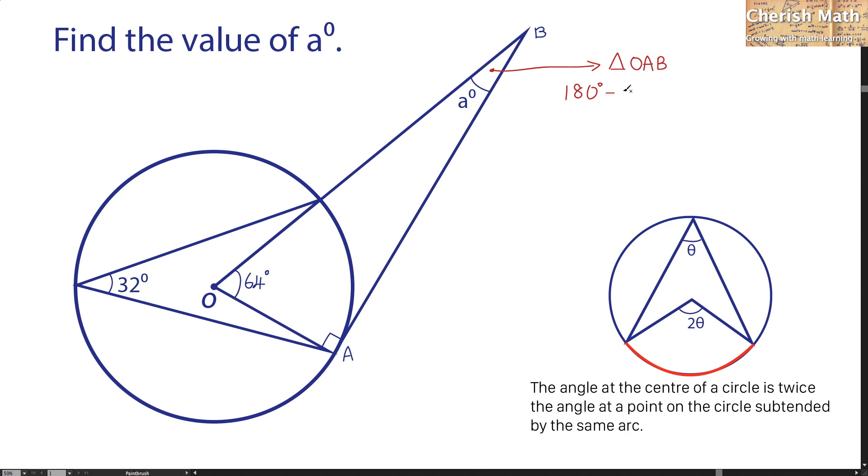I'm going to use 180 degrees minus 90 degrees, since this is the right angle, and minus 64 degrees. The answer that I'm going to get here for the value of a is 26 degrees, and we solved the puzzle. Thanks for watching and please subscribe.